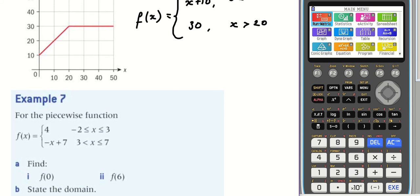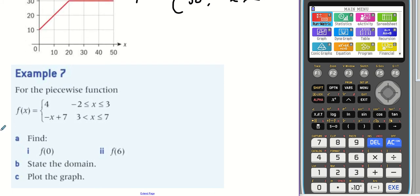So here we have a piecewise function. It's linear. So this would be a horizontal line. This is a line with a negative gradient, negative one crossing at the y-axis at seven. So when we're using a piecewise function, we need to know which part of the function we're using.